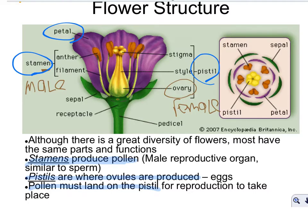Stamens produce pollen — they are the male reproductive organs, similar to sperm. Pistils are where ovules are produced — eggs. Pollen must land on the pistil for reproduction to take place. For the stamen, think 'men' — men means male. The stamen has your anther and your filament.